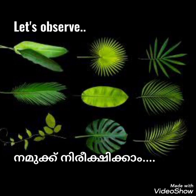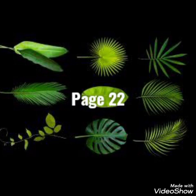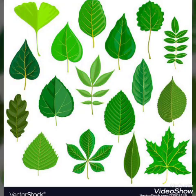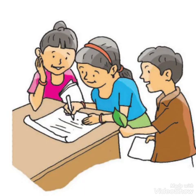Let's observe. All of you take page 22. Then take your leaves you collected, and try to say the names of which plants' leaves are there. This is how you can share the leaves. While you observe the shape and size of the leaves, also take note of the peculiarities of their vein-like structures.